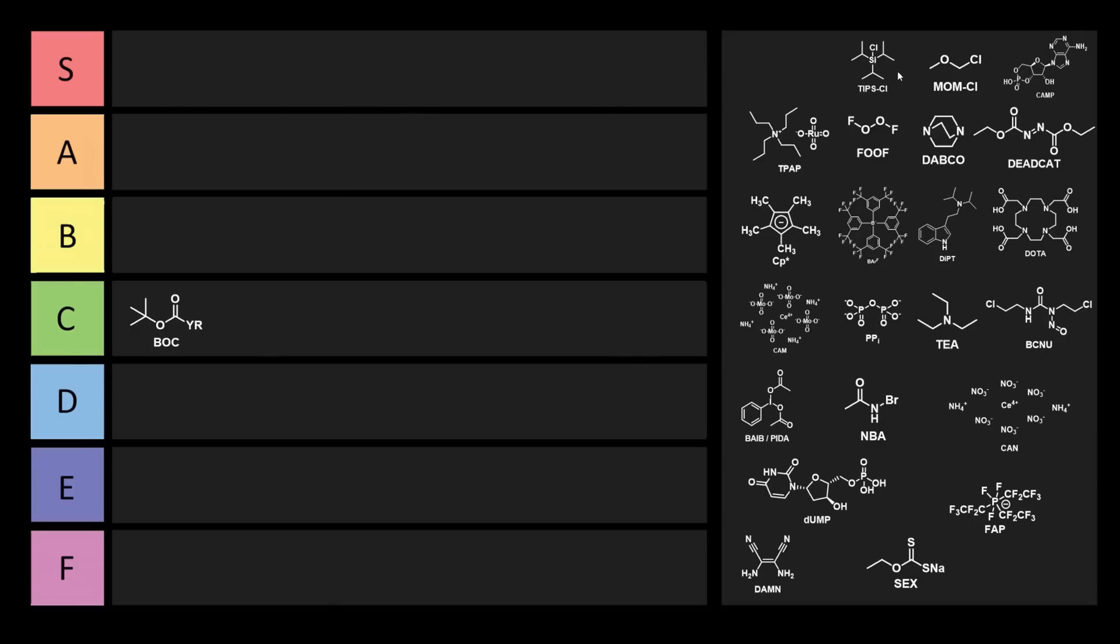Next we have TIPS chloride. TIPS chloride is triisopropyl silyl chloride. This is just a big bulky protecting group that people put onto alcohol groups in total synthesis. We're going to put TIPS into B tier. It's a little bit funny but not too terrible of an abbreviation, all things considered.